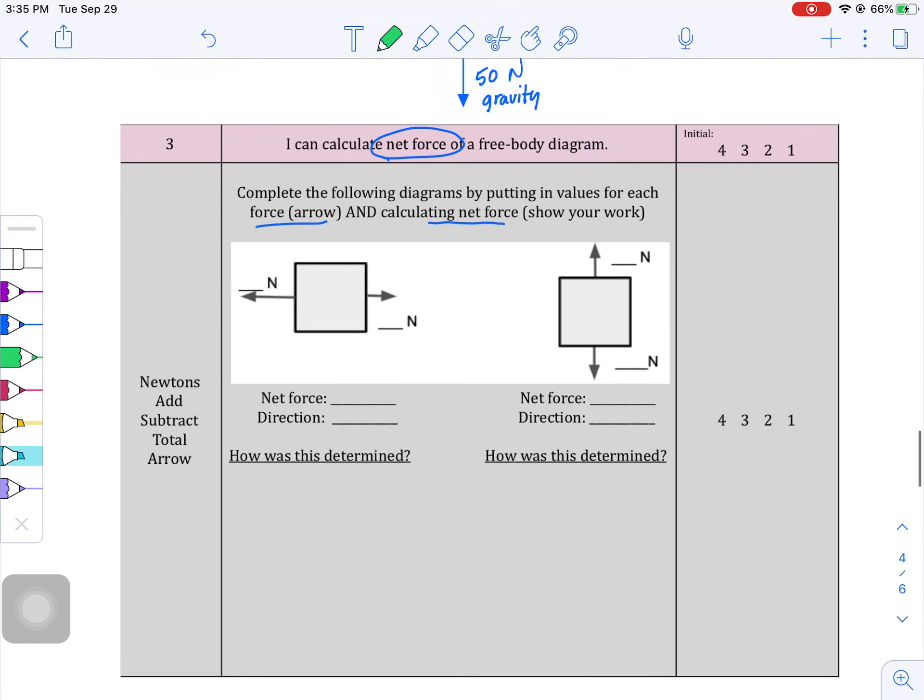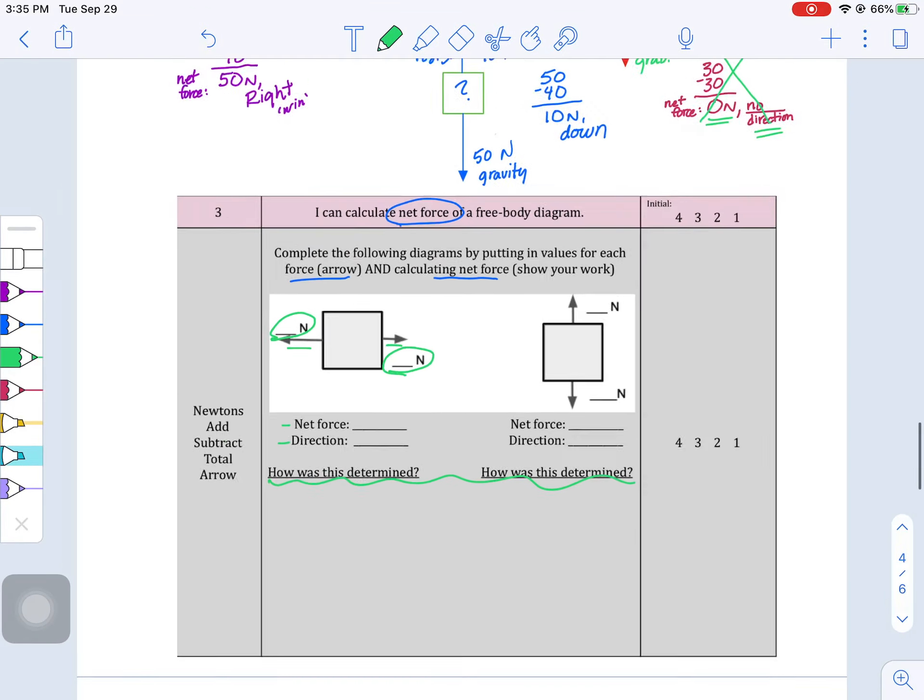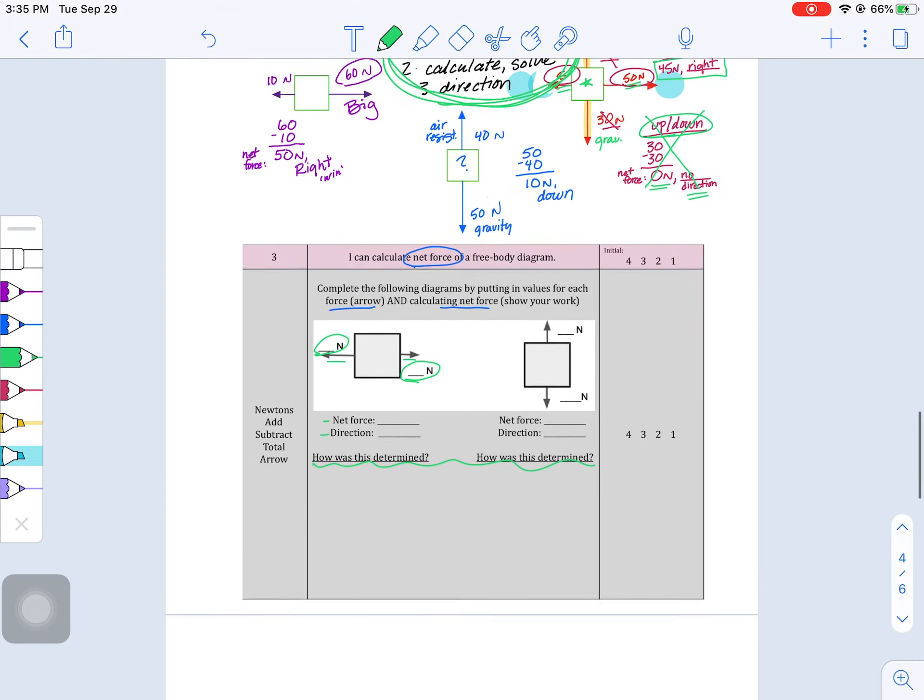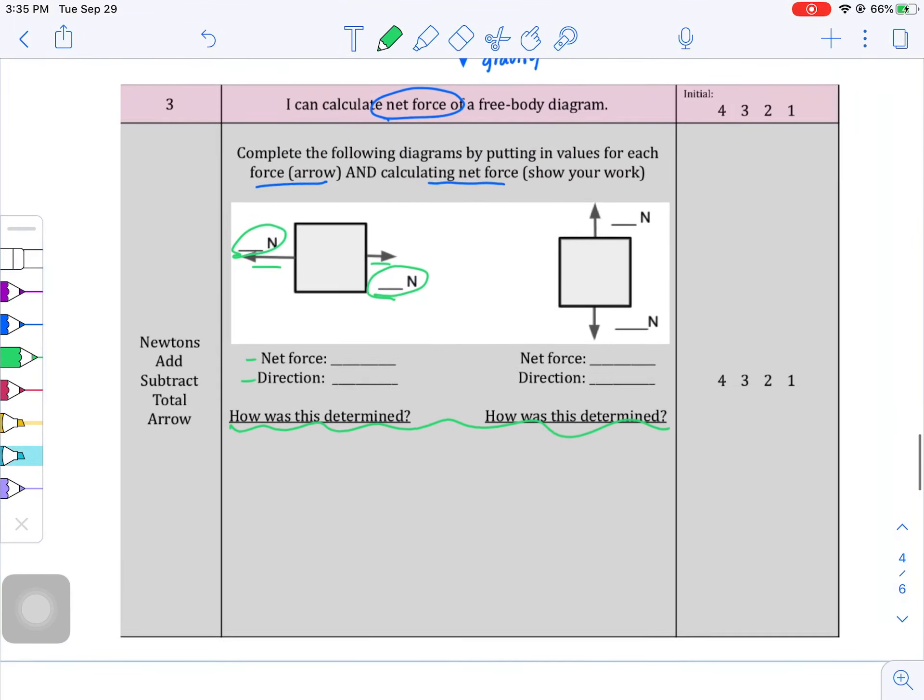So, all of that, now we're applying to our third learning target. So, you get to come up with these values. Taking notice of the arrows so you know which ones are big versus small. You're going to do your own calculation for net force and direction. And, then this how was it determined, that's kind of like you giving our play-by-play of how we figure this out. Direction, same or opposite, add or subtract, calculate, solve, and then direction.